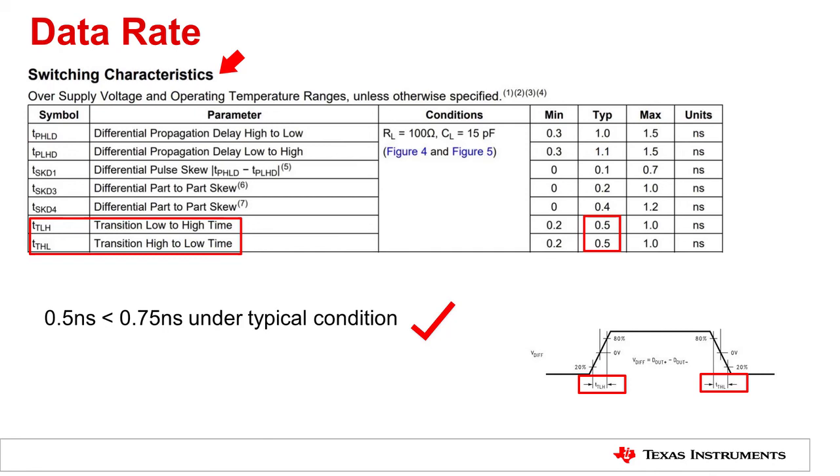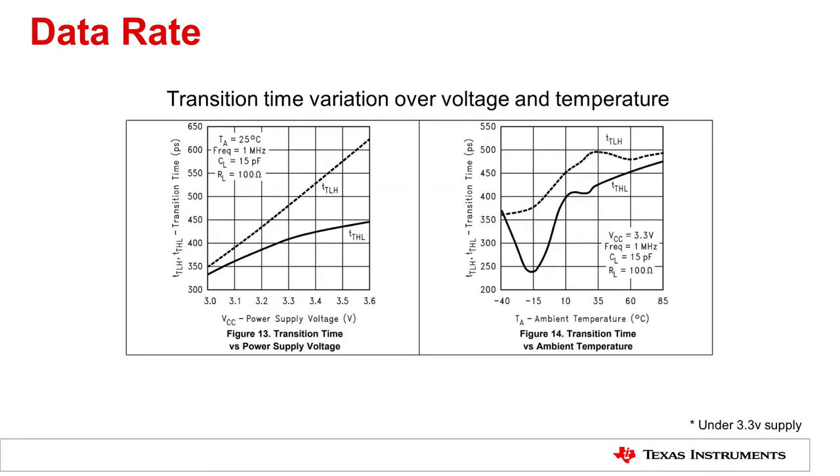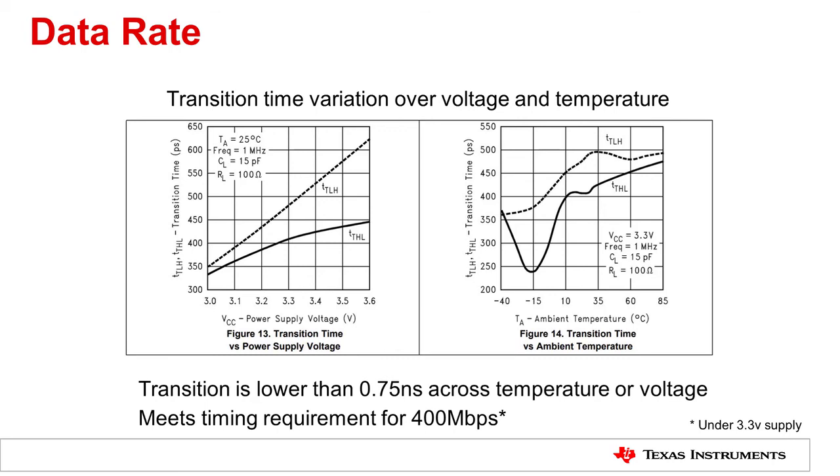In different environments, temperature and voltage may vary. So it is important for us to look at how the device performs under different temperature or voltage. TI typically includes this information in the datasheet. I have included the graphs here. As you can see, DS90LV011A still meets our timing requirement under different temperature and voltage.